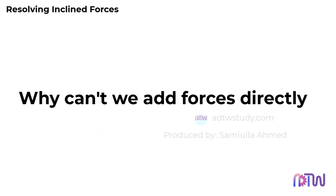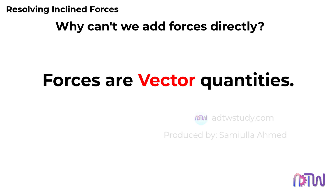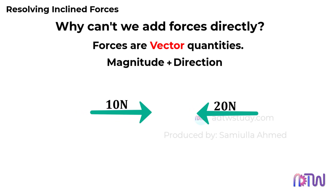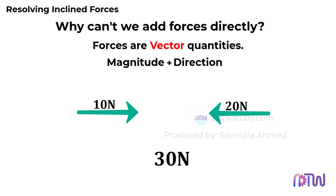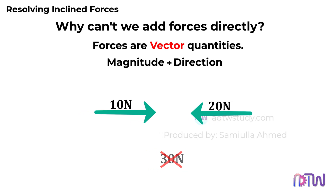Why can't we add forces directly? You might wonder why we can't simply add forces acting on a body directly. The reason is that forces are vector quantities, which means they have both magnitude and direction. To add multiple forces correctly, we need to consider both these aspects. Suppose two forces are acting in different directions. If we add these forces directly without considering their directions, the resulting force would be incorrect. When one force acts opposite to another, they oppose each other, and the stronger force will determine the direction of the resultant force.